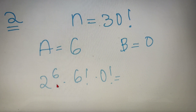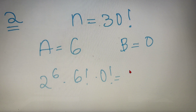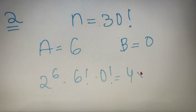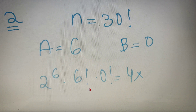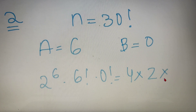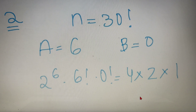2 to the power 6 is 64, so the last non-zero digit is 4. 6 factorial is 720, so the last non-zero digit is 2. And 0 factorial is 1, so we take 1. Therefore, the last non-zero digit of 30 factorial is 8.